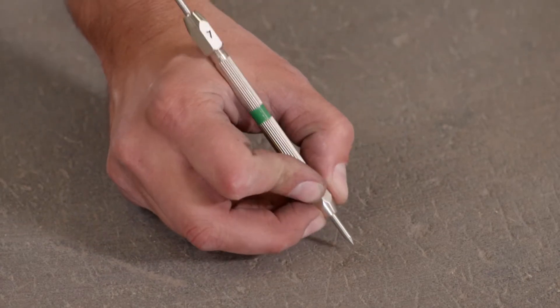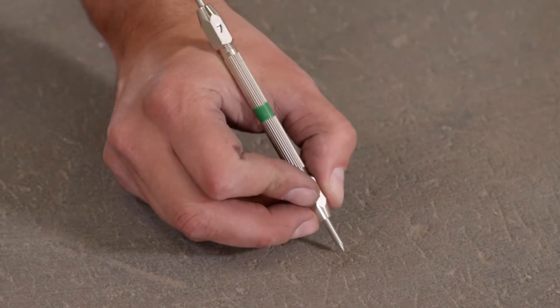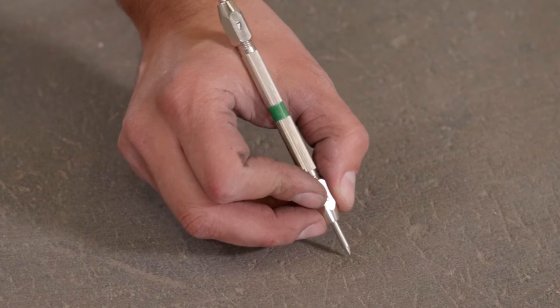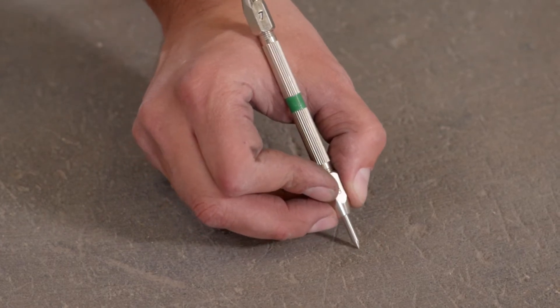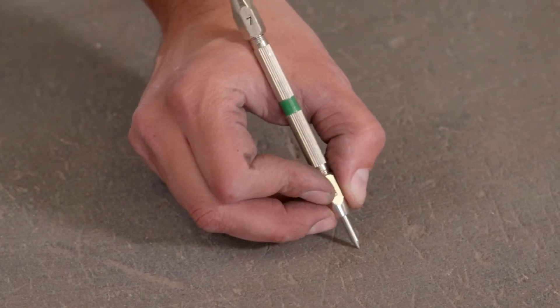Here we did it with a number six, and we can see that it is scratching the concrete. If you slide the pick across it, you should be able to feel that little scratch.